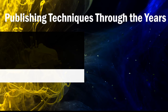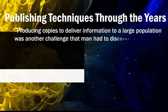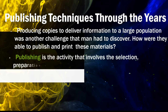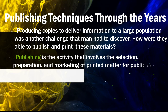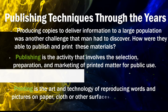The publishing techniques through the years. Producing copies to deliver information to a large population was another challenge that men had to discover. How were they able to publish and print these materials? Publishing is the activity that involves the selection, preparation, and marketing of printed matter for public view. While printing is the art and technology of reproducing words and pictures on paper, cloth, or other surfaces.